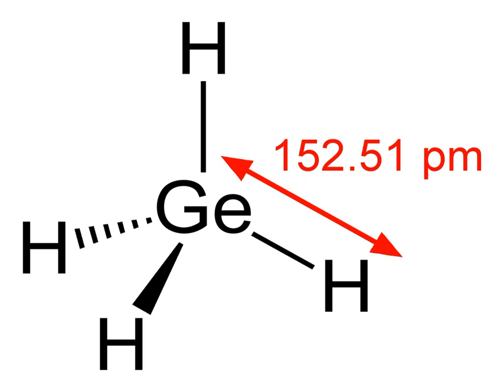Germaine is the chemical compound with the formula germanium hydride, and the germanium analog of methane. It is the simplest germanium hydride and one of the most useful compounds of germanium. Like the related compounds silane and methane, germaine is tetrahedral. It burns in air to produce germanium oxide and water.